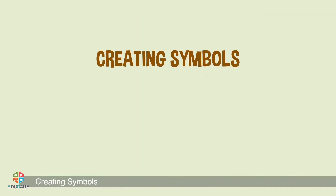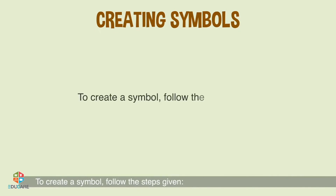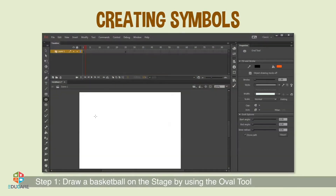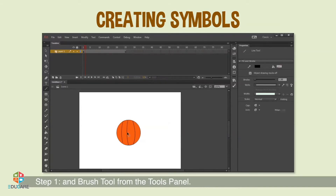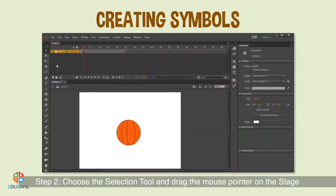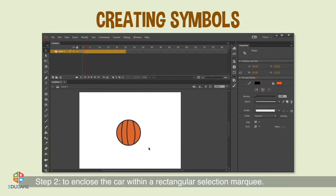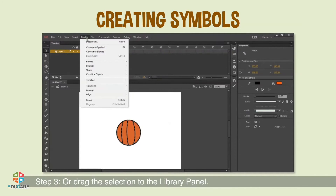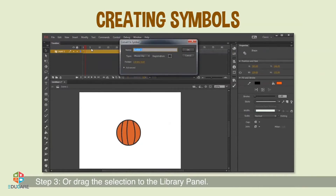Creating Symbols: To create a symbol, follow the steps given. Step 1: Draw a basketball on the stage by using the oval tool and brush tool from the tools panel. Step 2: Choose the selection tool and drag the mouse pointer on the stage to enclose the ball within a rectangular selection marquee. Then select Modify, Convert to Symbol, or drag the selection to the library panel.